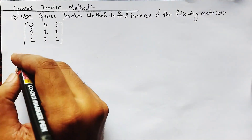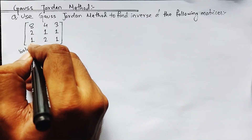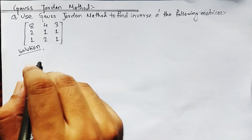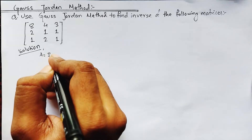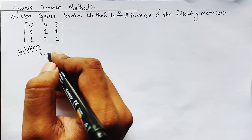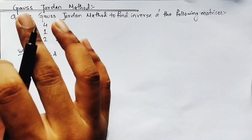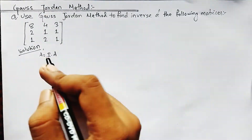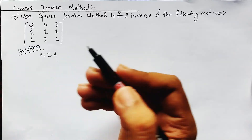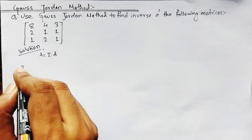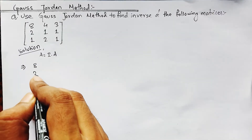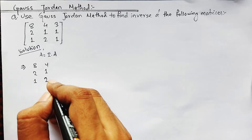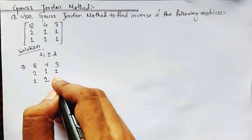Let's begin the solution. For solving any numerical using the Gauss-Jordan method to find the inverse, we write it as A equals I times A, where I is the identity matrix. Multiplying any matrix by the identity matrix gives the same matrix. The given matrix is: [8, 2, 1; 4, 1, 2; 3, 1, 1].